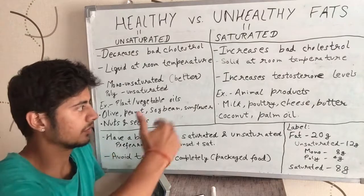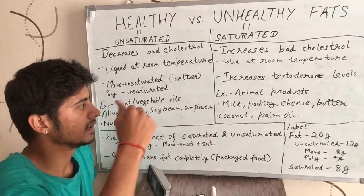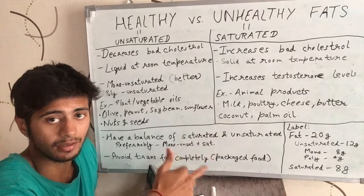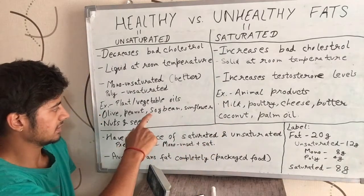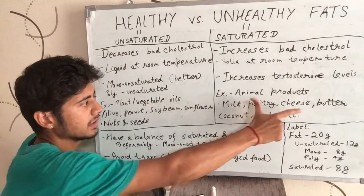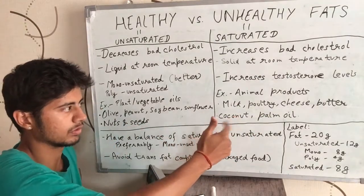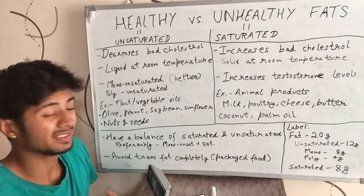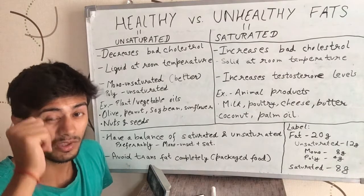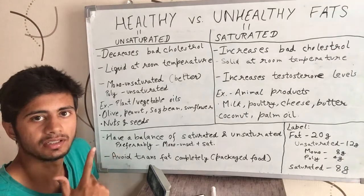Examples of saturated fats are mostly found in animal products — for example, milk, cheese, butter, and poultry. There are also a few plant sources of saturated fat, such as coconut oil and palm oil. Notice that unsaturated fat sources are mostly liquid at room temperature, while saturated fat sources — like coconut oil, cheese, and butter — are more solid at room temperature. That is how you can identify a fat most of the time.